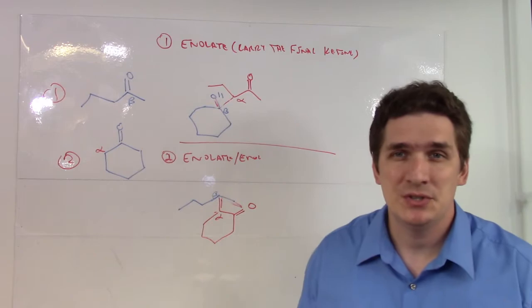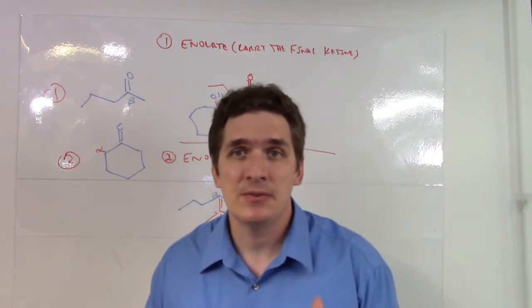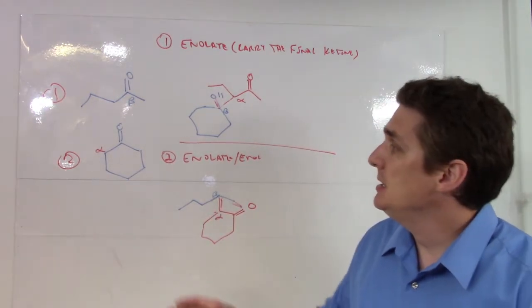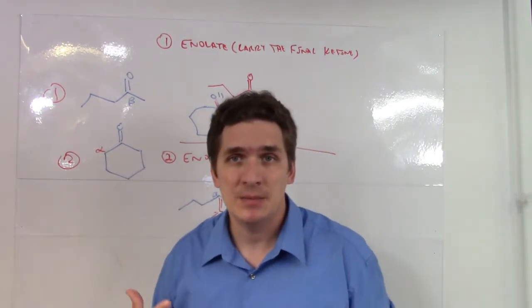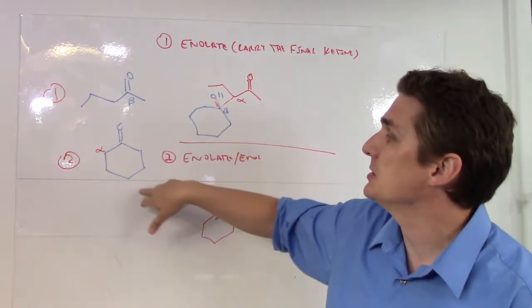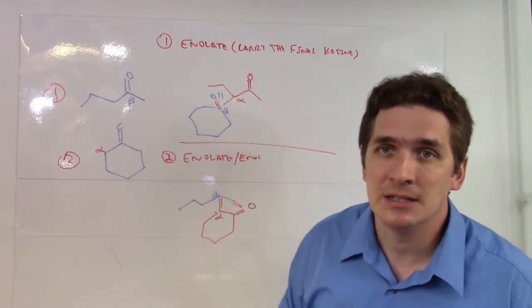Either case, hopefully you're seeing this. So to predict the products, identify based on the final compound what are going to be the final alpha and beta carbons. If you've got two asymmetric complexes or you've got two different ketones or aldehydes you're working with, you're going to have to consider both scenarios.